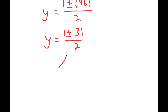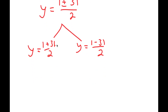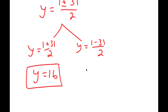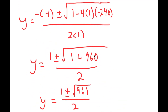And this gives me two solutions. I get y equals 1 plus 31 over 2, and y equals 1 minus 31 over 2. So 1 plus 31 is 32, and 32 over 2 is 16. And 1 minus 31 is negative 30, and negative 30 over 2 is negative 15. So I have y equals 16 and y equals negative 15.